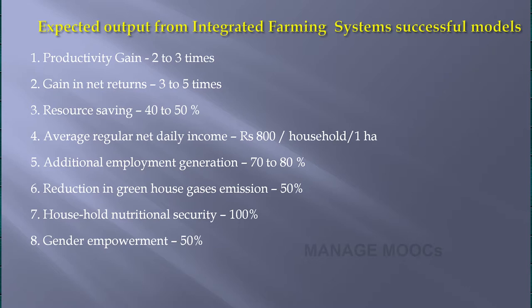The net return will be 3 to 5 times from this integrated farming system, and that with a saving of 40 to 50 percent of resources. Researchers have shown that nearly rupees 800 per household per hectare income can be earned through integrated farming system. Along with the increase in income, there is additional employment generation — nearly 70 to 80 percent additional employment can be generated through this approach.